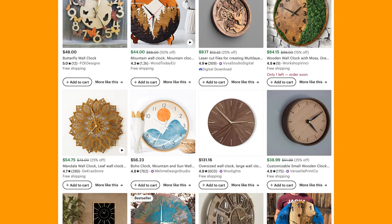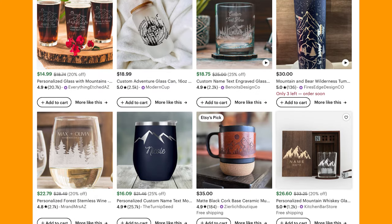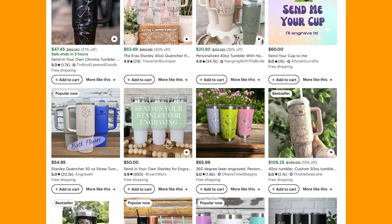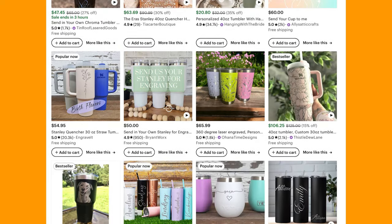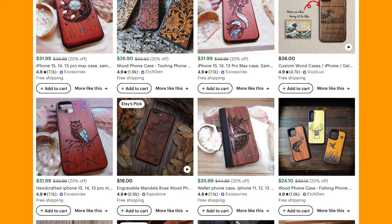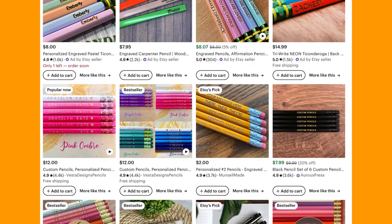Number nine, clocks. Number ten, cups. As I mentioned, you can engrave on glass, but you also can engrave on tumblers like the Stanley Cup. You'll just need the additional rotary attachment to be able to do that. Number eleven, phone cases. Number twelve, custom engraved pencils.